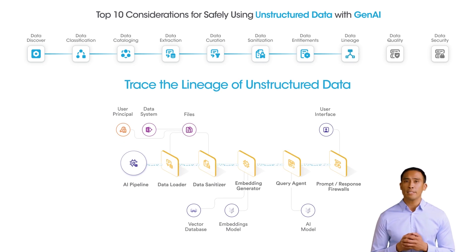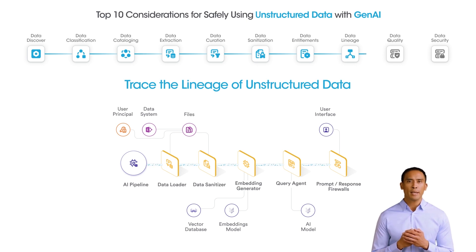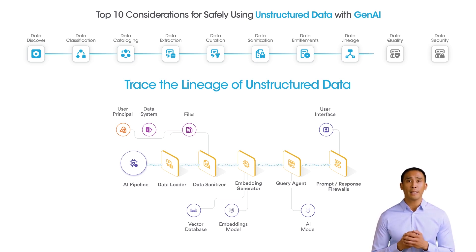Understanding data lineage is crucial to tracking data flow from unstructured systems through vector databases to LLMs and finally to endpoints. With comprehensive data lineage, organizations can confidently manage and govern their Gen AI projects from start to finish.